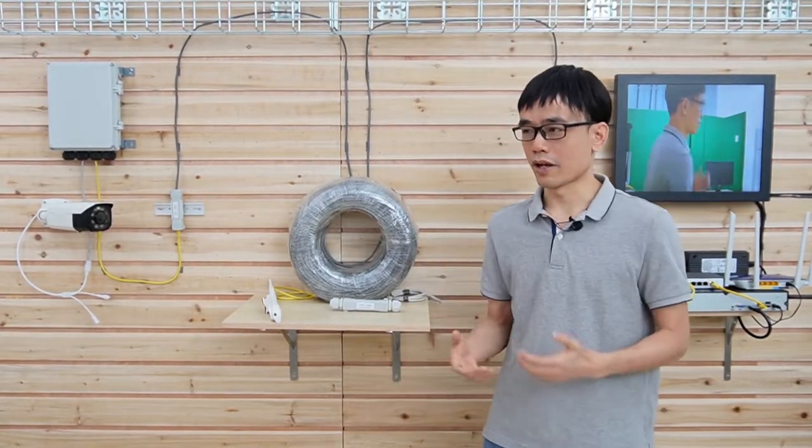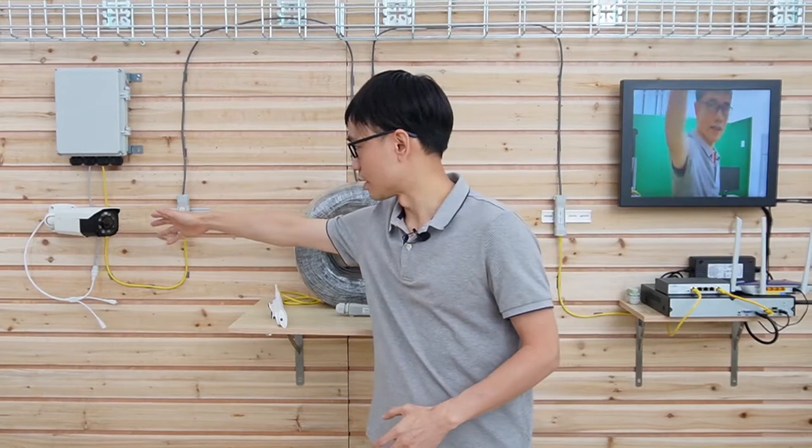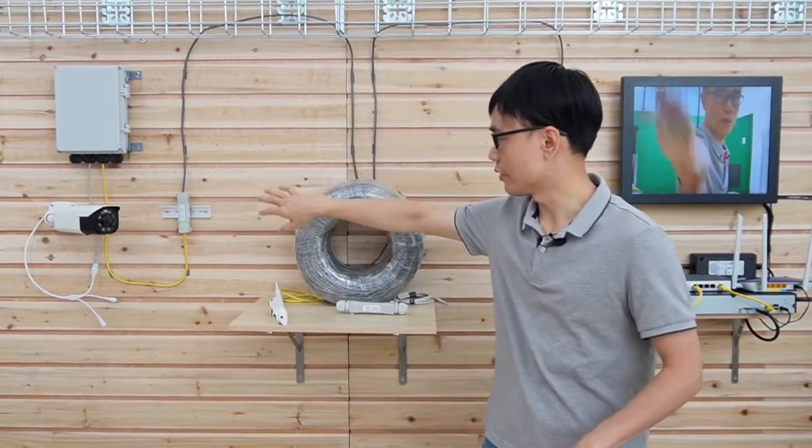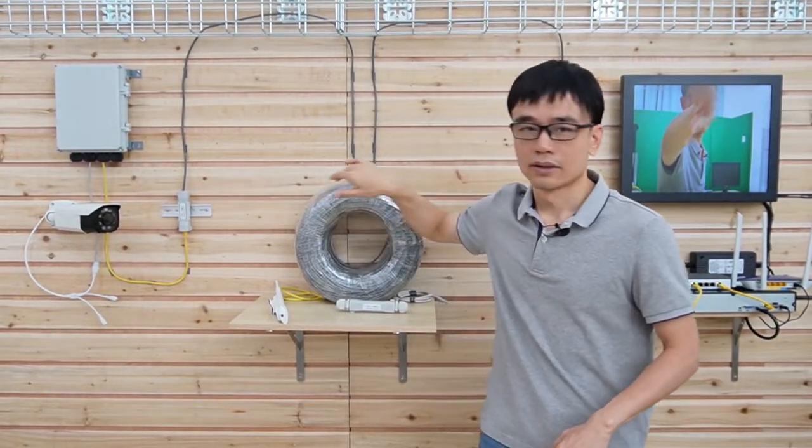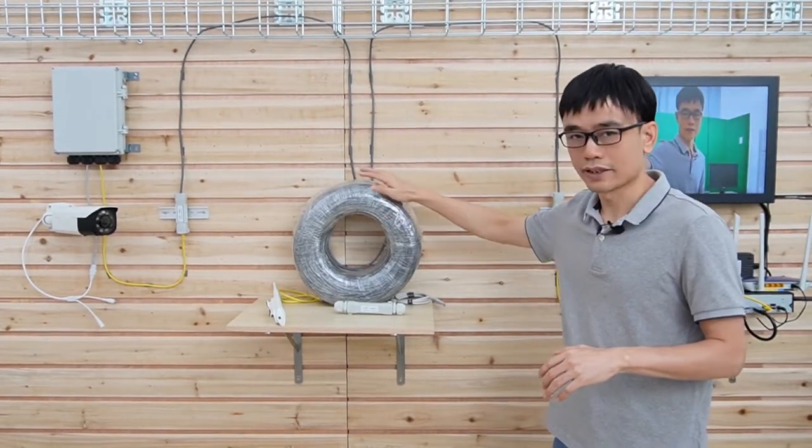First, let's recap what we did in the last video. We have 4 cameras at the edge, and there's about 1,000 feet from the camera to the network video recorder. This is the 1,000 feet continuous run Ethernet cable.